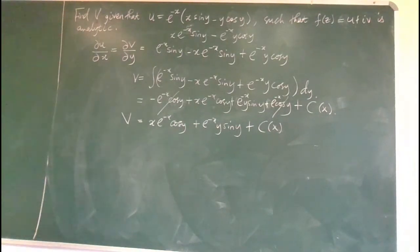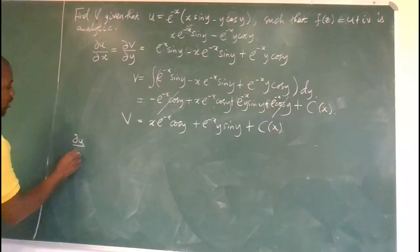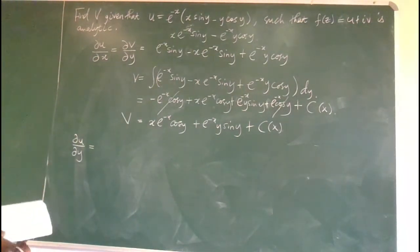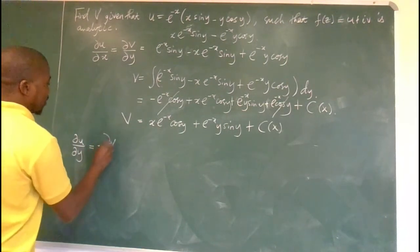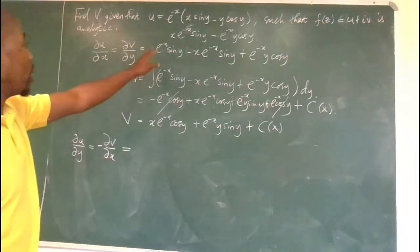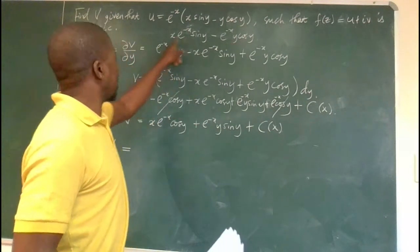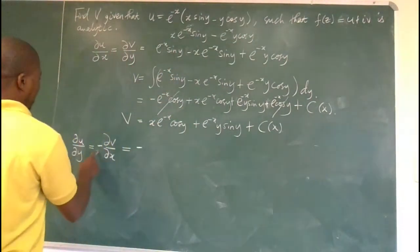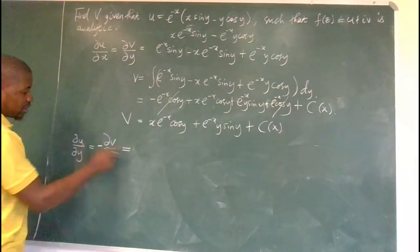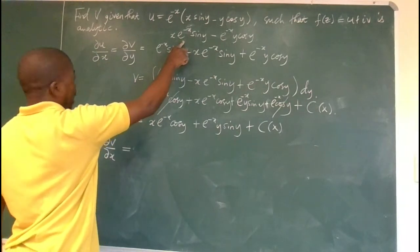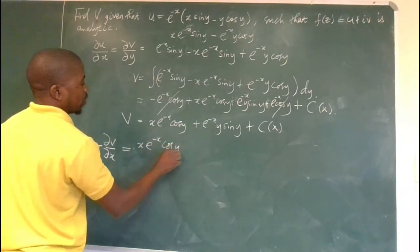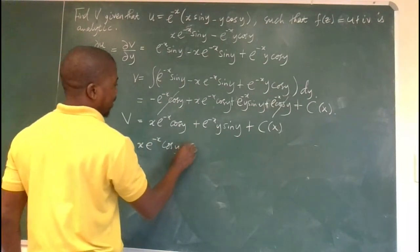Due to the function being analytic, the partial of u with respect to y should equal negative the partial of v with respect to x. So let's compute ∂u/∂y. The differential of sin(y) is cos(y), so we get xe^(-x)cos(y), and then differentiating the second term as a product gives -e^(-x)(cos(y) + ...).